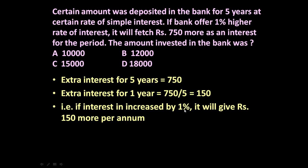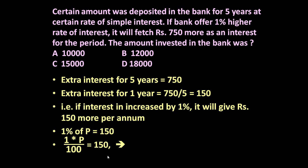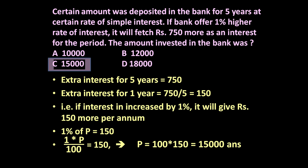This is the key insight: 1% of P is equal to 150, where P is the amount invested. So 1% of P means 1 × P divided by 100 equals 150. Simplifying this gives P equal to 100 × 150, which equals 15,000.